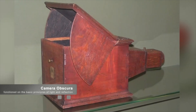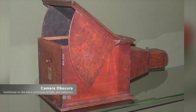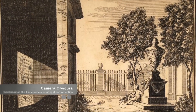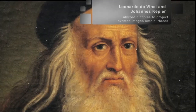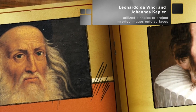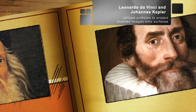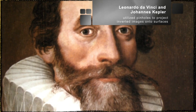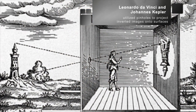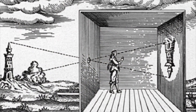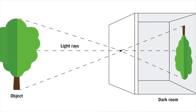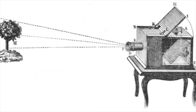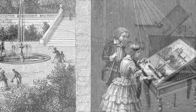The camera obscura, a precursor to modern cameras, functioned on the basic principles of light and reflection. Early pioneers like Leonardo da Vinci and Johannes Kepler experimented with primitive camera designs, utilizing pinholes to project inverted images onto surfaces. These early explorations laid the foundation for the development of more sophisticated imaging devices in the centuries to come.